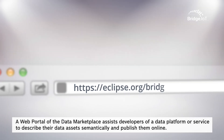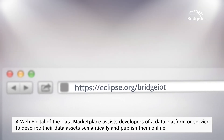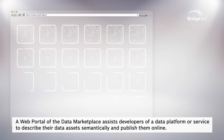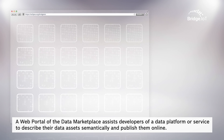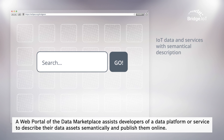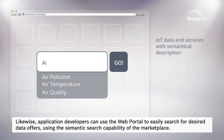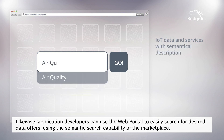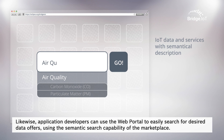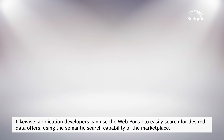A web portal of the data marketplace assists developers of a data platform or service to describe their data assets semantically and publish them online. Likewise, application developers can use the web portal to easily search for desired data offers, using the semantic search capability of the marketplace.